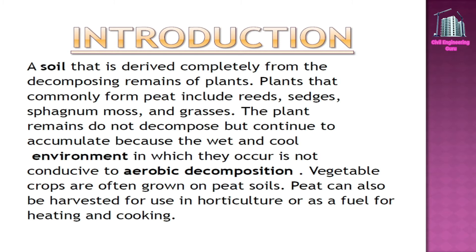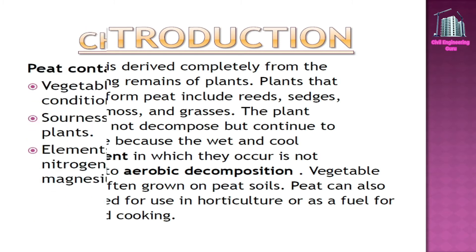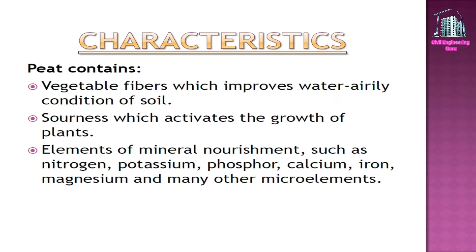Vegetable crops are often grown on peat soils. Peat can also be harvested for use in horticulture or as a fuel for heating and cooking. Characteristics: Peat contains vegetable fibers which improve the water aeration condition of soil, and sourness which activates the growth of plants.